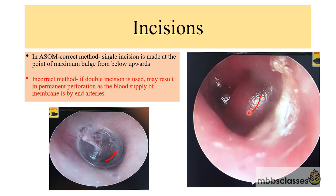The incision is made between the umbo and the posterior canal wall. If accidentally a double incision is made — one incision from below upwards and another incision accidentally made parallel to the first — this may lead to permanent perforation of the tympanic membrane as a complication. The reason is that the blood supply of the membrane is by end arteries.